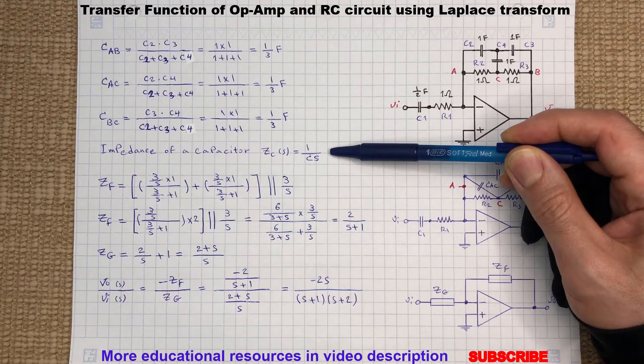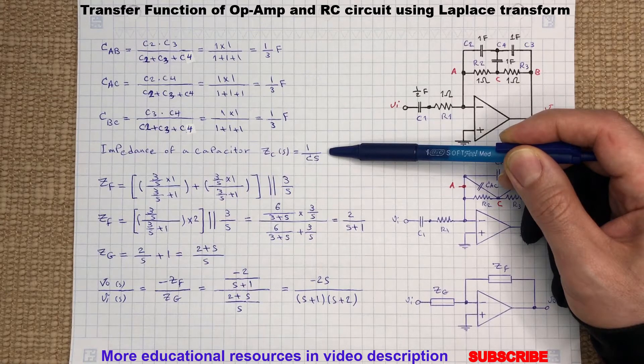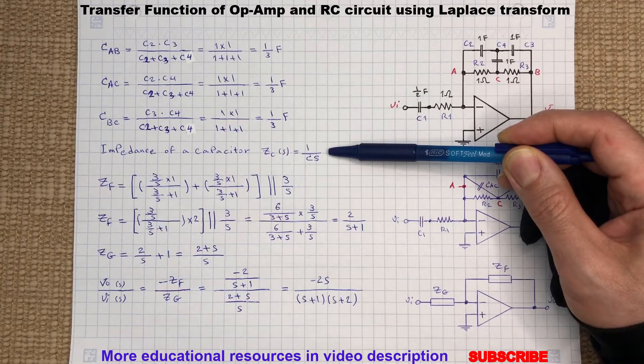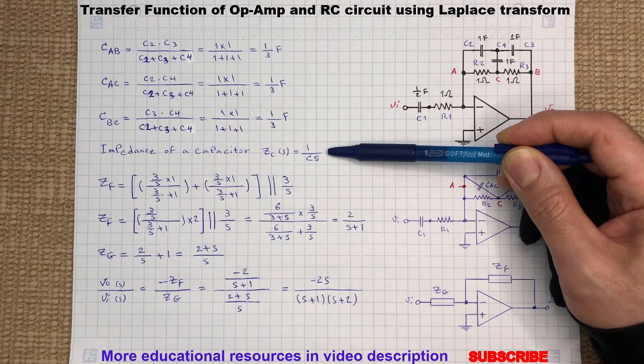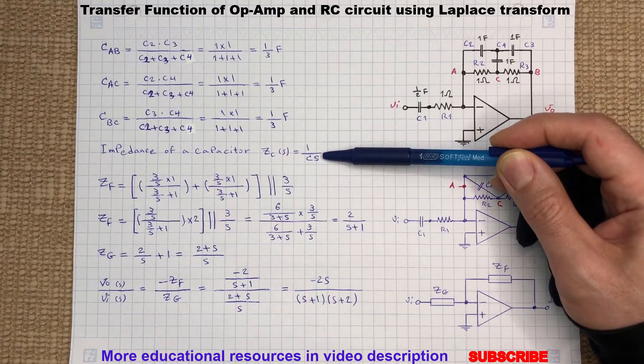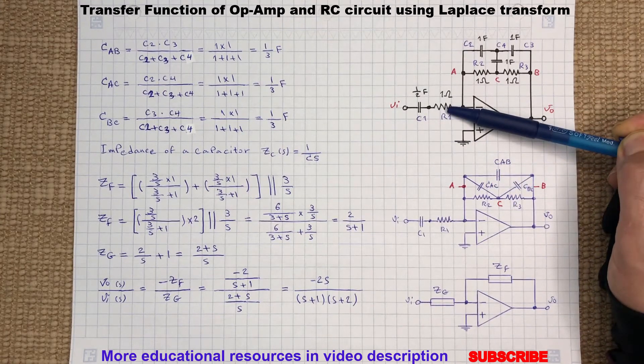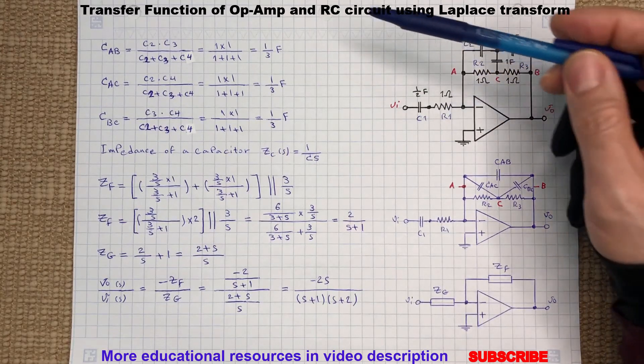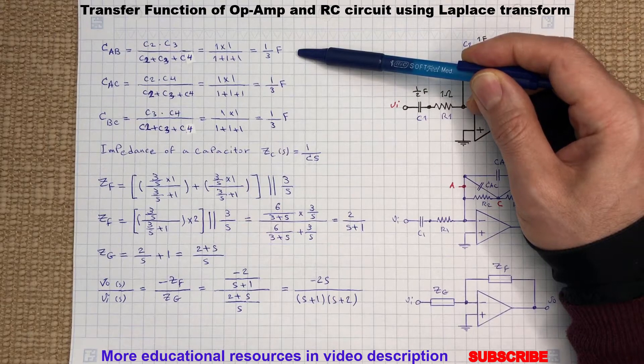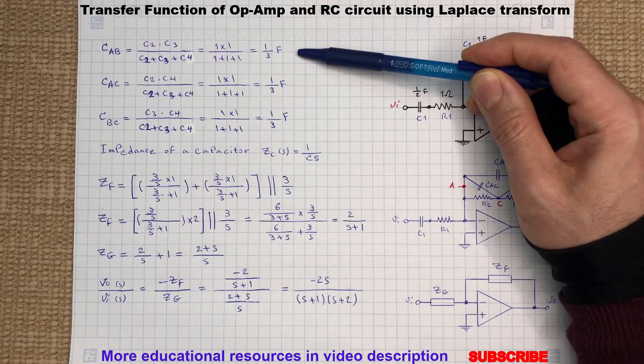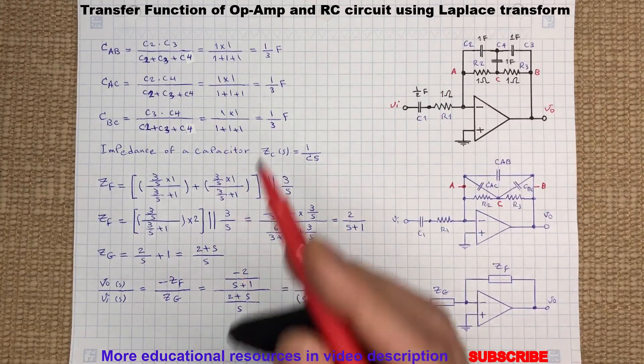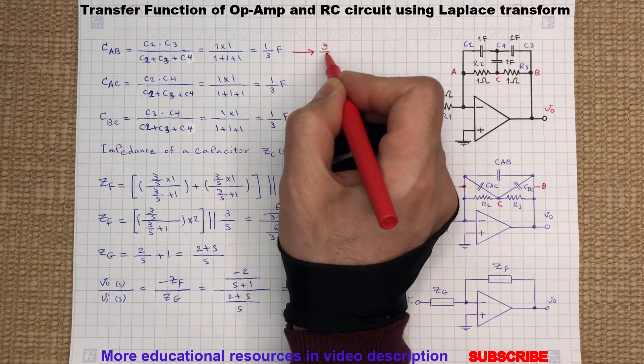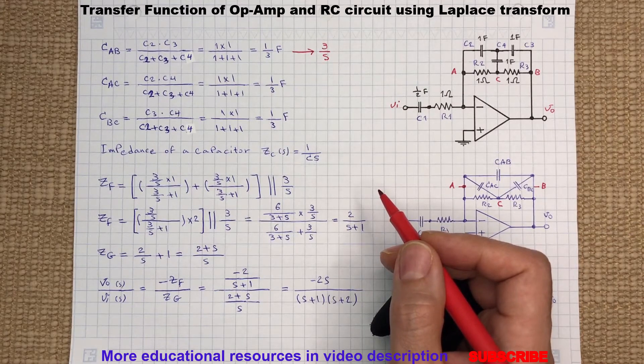Now we need to find the capacitor's impedance. From circuit analysis we know a capacitor with zero initial voltage has an impedance of one divided by Cs in Laplace domain, and a resistor has the same constant value in the Laplace domain. So the Laplace transform of CAB will be 3 over S, and the same for CAC and CBC.